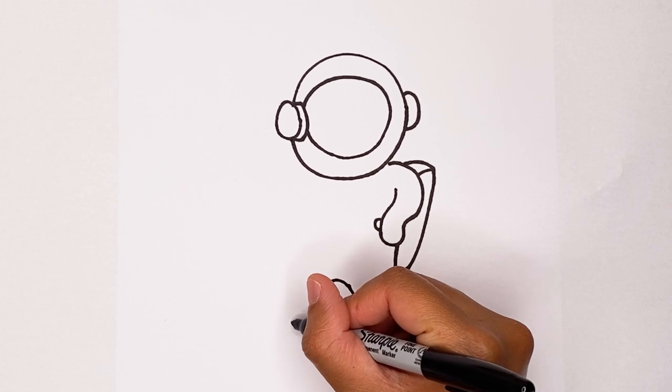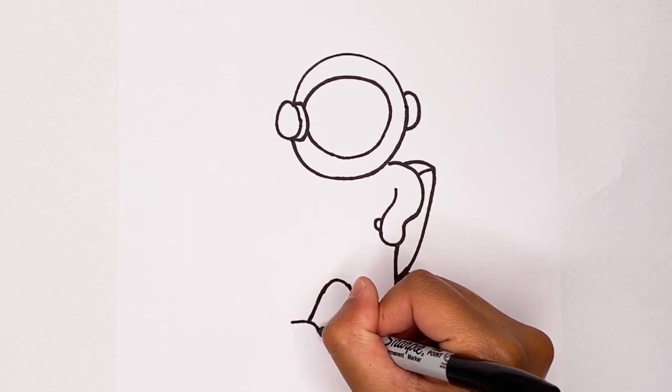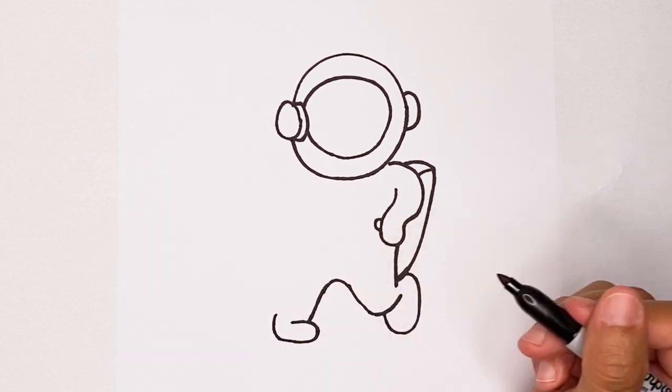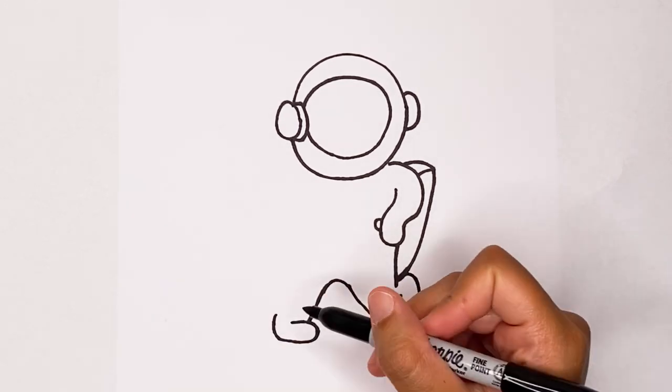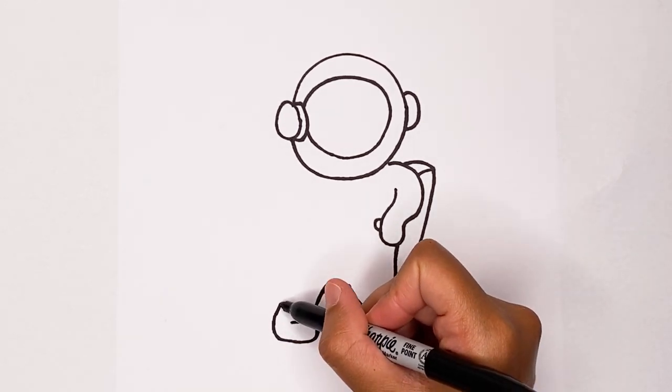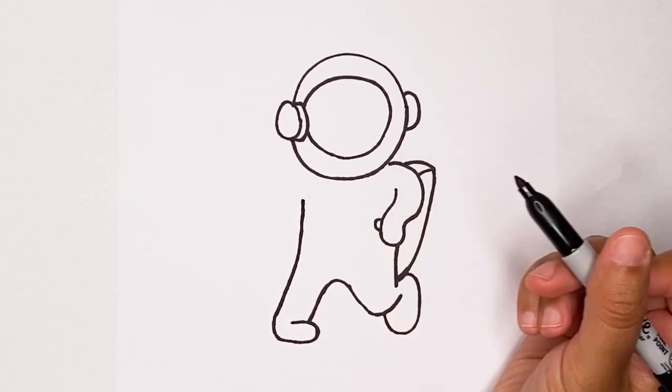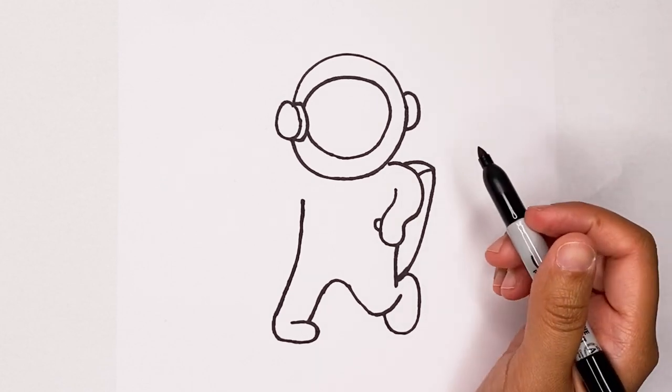Now let's make another foot. He's going to be kind of juking the ball around. So let's bring those lines around like that. And then this line is going to go up, up, up, up, up all the way to about right there. Looks good so far.